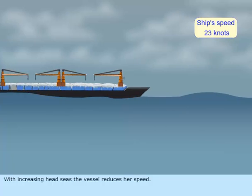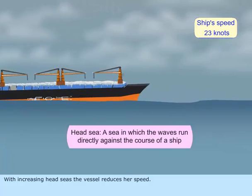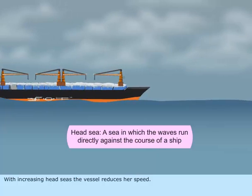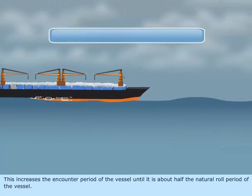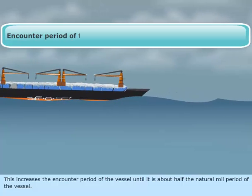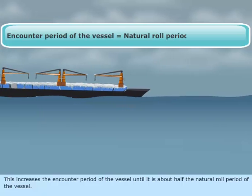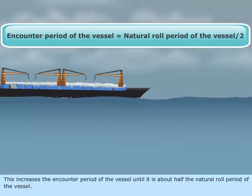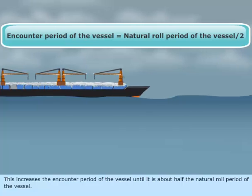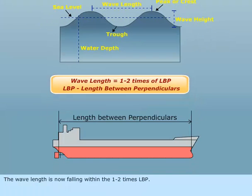With increasing head seas, the vessel reduces her speed. This increases the encounter period of the vessel until it is about half the natural roll period of the vessel. The wavelength is now falling within 1 to 2 times LBP.